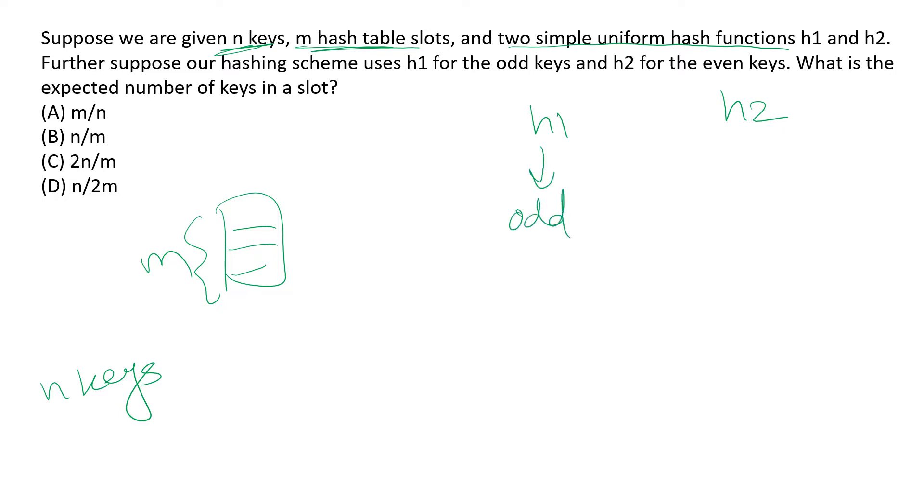Further suppose our hashing scheme uses h1 for the odd keys and h2 for the even keys. What is the expected number of keys in any particular slot? By saying simple uniform hash functions, they simply convey that we are using a simple hashing technique in which every key has an equal probability of landing into any of these m slots.